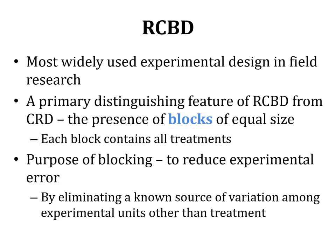So what is the purpose of blocking? In CRD, we only have one block, and all experimental units within it receive randomly assigned treatments. But in RCBD, the entire field is divided into different blocks, and treatments are assigned randomly within each block. Each block has all of the treatments. The purpose of blocking is to reduce the experimental error. It reduces experimental error by eliminating unknown sources of variation among experimental units, other than treatment.